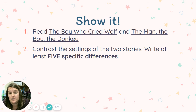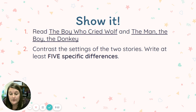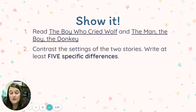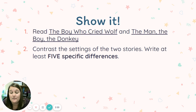You'll show it today. What you're going to do is read The Boy Who Cried Wolf and The Man, The Boy, The Donkey — both posted. Look at those settings and think: how are they different? Don't give me similarities, only tell me differences. I want five specific differences. Think about the time period, the location, and the environment. How are these stories different? Focus on the setting. If you have any questions, please let me know — I want to answer your question.